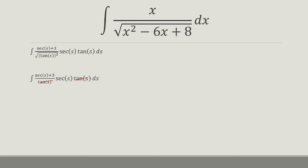So this secant plus 3 is going to distribute with the secant. So that's secant squared plus 3 secant s ds. And now I can break this up into two separate integrals.